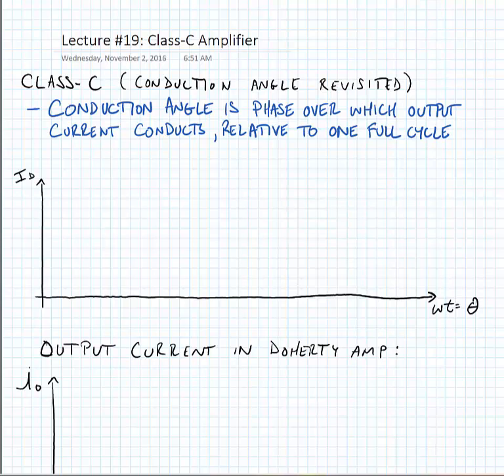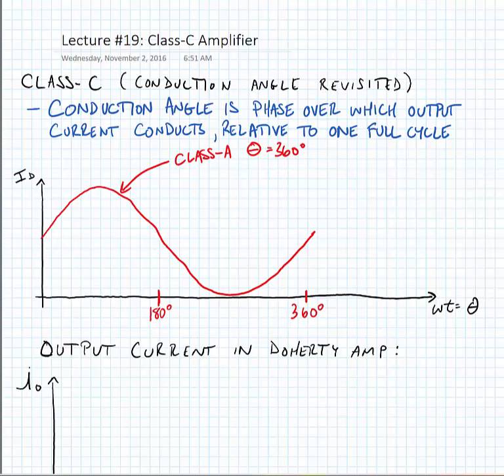We start with the simplest amplifier, which is the Class-A, and the Class-A has a conduction angle of 360 degrees. In other words, the current is always conducting in a Class-A. Now we've also looked at the Class-B, and the Class-B only conducts over 180 degrees or half of the cycle.